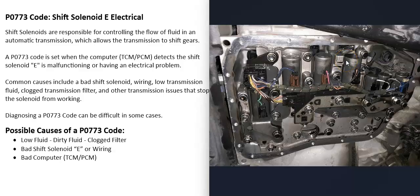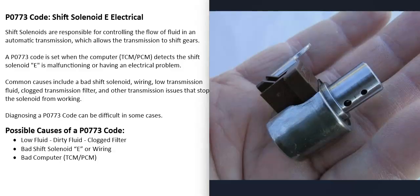Transmissions have a lot of solenoids built into them that let the computer control the fluid pressure and where it's going, which causes the transmission to shift gears. When you get this P0773 code, the computer's seeing a problem with one of these solenoids, mainly this shift solenoid E, so it's got to be troubleshooted to know why.